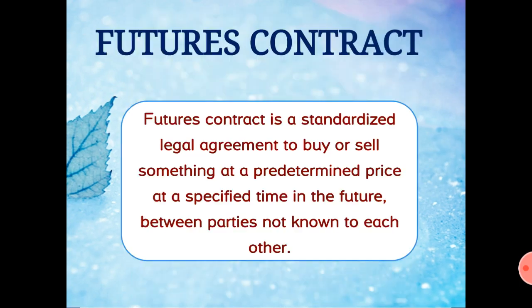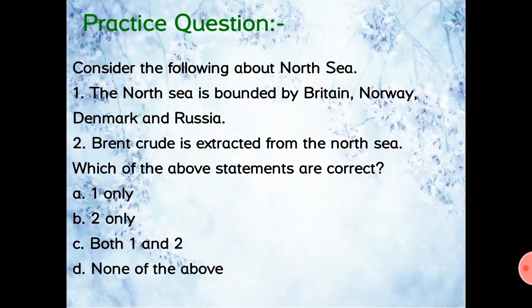Coming back to the prelims practice question: consider the following about the North Sea. Statement 1 says the North Sea is bounded by Britain, Norway, Denmark, and Russia. Statement 2 says Brent crude is extracted from the North Sea. Statement 2 is true. Statement 1 is wrong because Russia doesn't border the North Sea. So the answer is option B — 2 only.